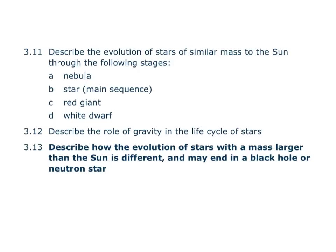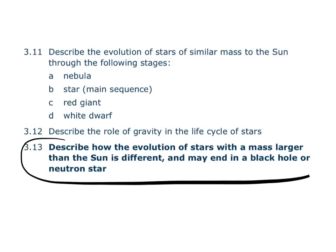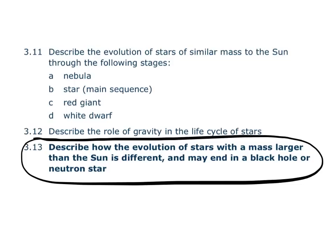The next thing we need to be able to do is describe how the evolution of stars of a mass larger than the Sun is different, and how it may end in a black hole or a neutron star. So let's go and do that. The stars that are bigger than our Sun have a different life.